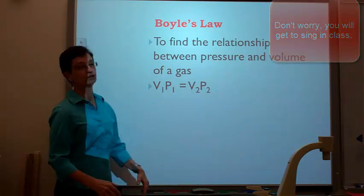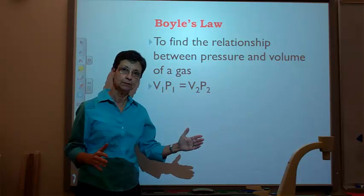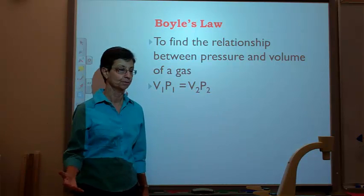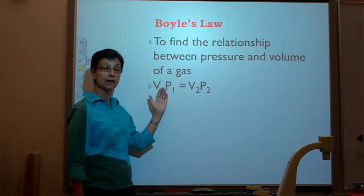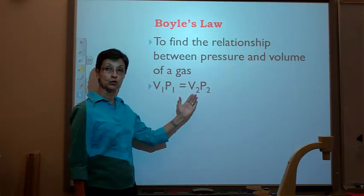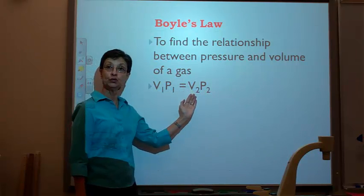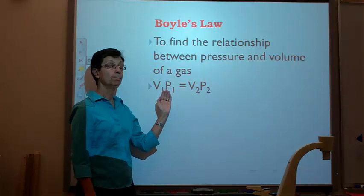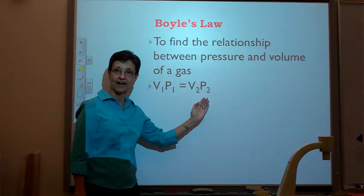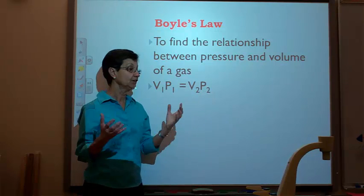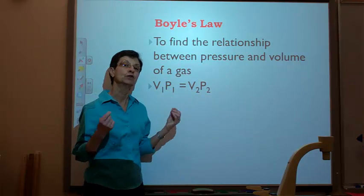So now let's talk about Boyle's Law. Specifically, it is the relationship between volume and pressure. The mathematical relationship is V1 times P1 equals V2 times P2, where V1 is the initial volume, V2 is the final volume, P1 is the initial pressure, and P2 is the final pressure. These two relationships are set up so that they are inversely proportional.